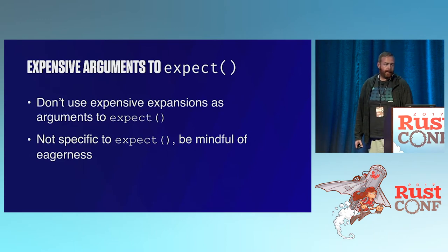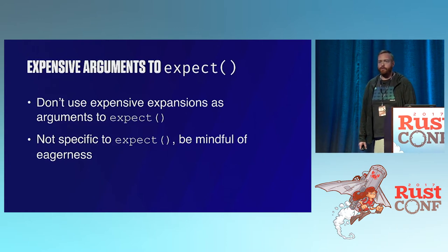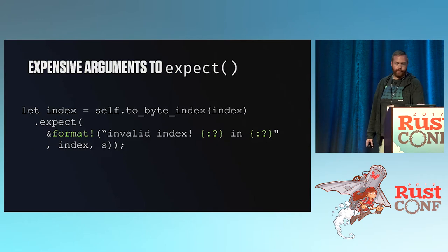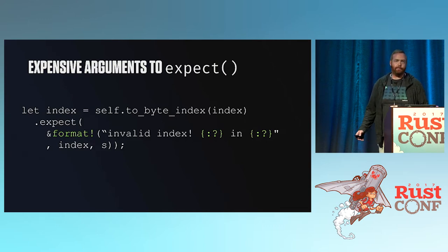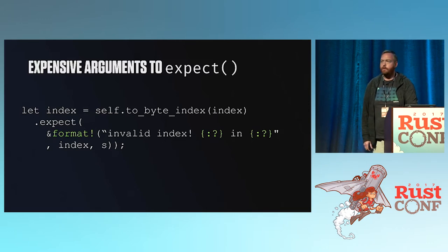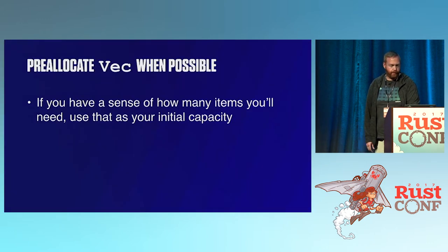Something else that can bite you is using expensive arguments in places where you don't expect the code to be called. Expect is a good example — you often expect your code to work. But you can put something slow inside expect. This was pulled out of one of Eliza's libraries: a format! macro call ended up in the hot path and was called a bazillion times every second. Pulling it out and doing something cheaper sped up the program dramatically. This isn't specific to expect — it's about the fact that Rust is eager, and you have to remember the evaluation order.